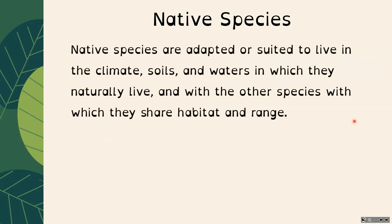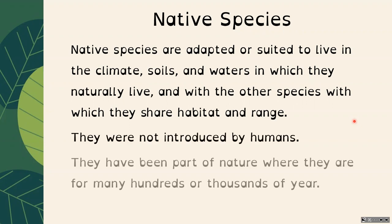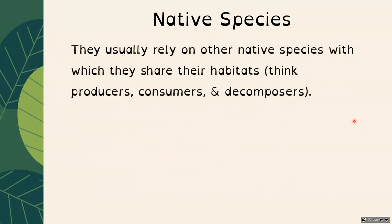Native species are adapted or suited to live in the climate, soils, and waters in which they naturally live, and with the other species with which they share their habitat. They were not introduced by humans and they've been part of nature in their area for many hundreds and thousands of years. Things can be native species in one place and an invasive species in another. Native species usually rely on one another — thinking about producers, consumers, and decomposers — they work together to thrive in that ecosystem.